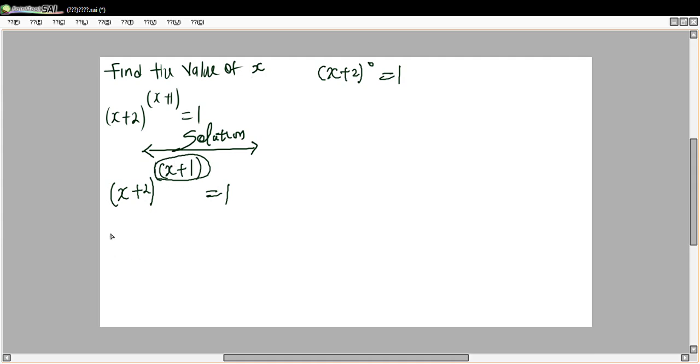Then case one: that would be (x+1) must be equal to zero, so your x must be equal to minus one. That is the first case.